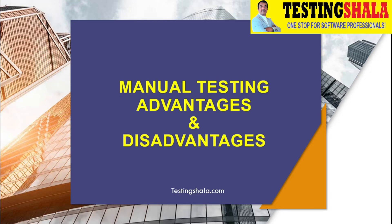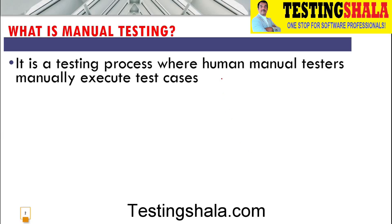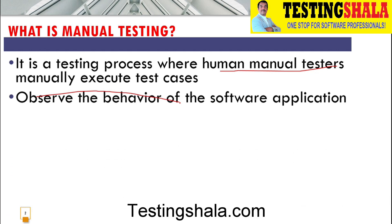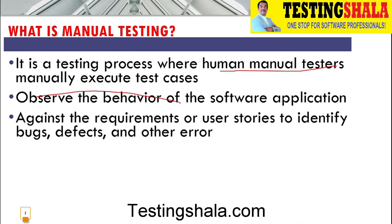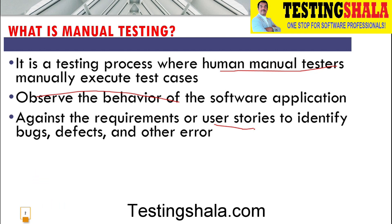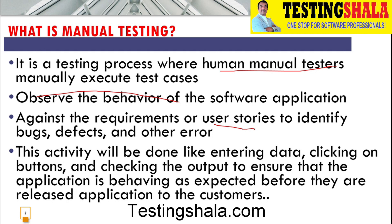Welcome back. In this video we will be learning about manual testing. Manual testing is a testing process where a human tester executes test cases manually. As a manual tester, your job is to observe the overall behavior of the software application and to see whether the application is behaving as expected against the requirements or user story, in order to identify bugs and defects.